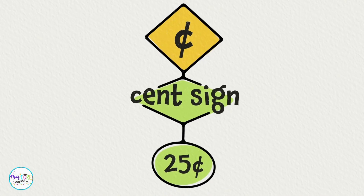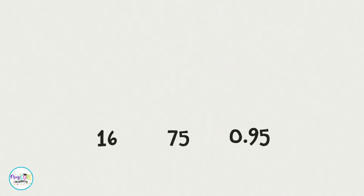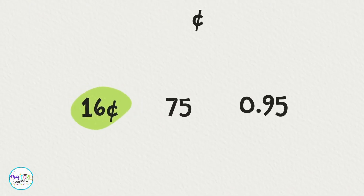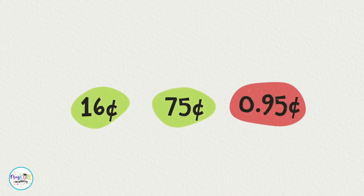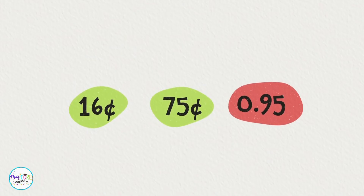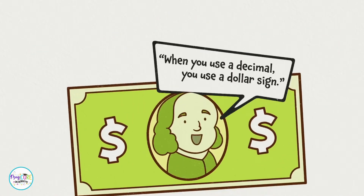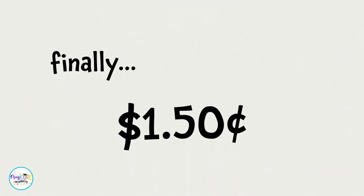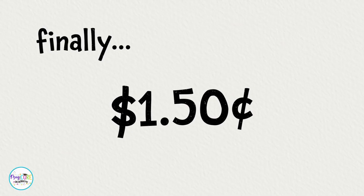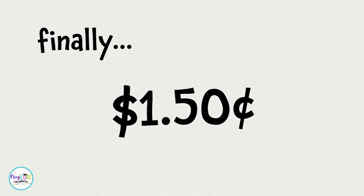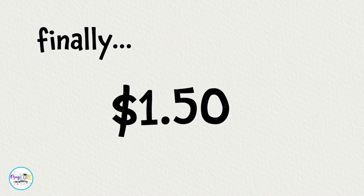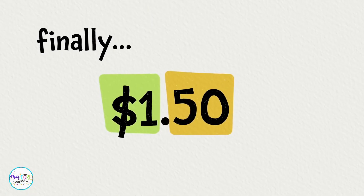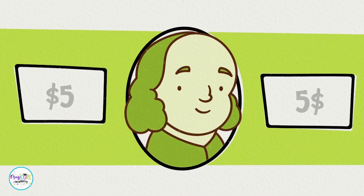For example, put it after 25 and you've got 25 cents. The most important thing to remember about the cent symbol is that you can only use it after whole numbers — never after any amount with a decimal. Remember, when you use a decimal, you use a dollar sign. Finally, you never need to write the cent symbol on one side and the dollar symbol on the other; using both just isn't necessary, because the decimal tells you where dollars end and cents begin.